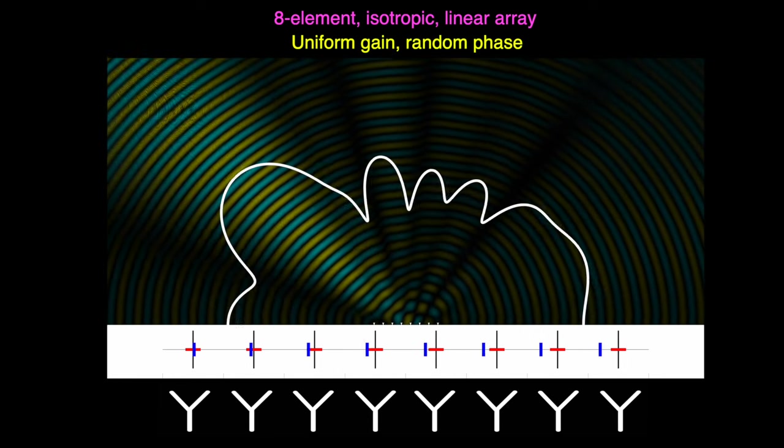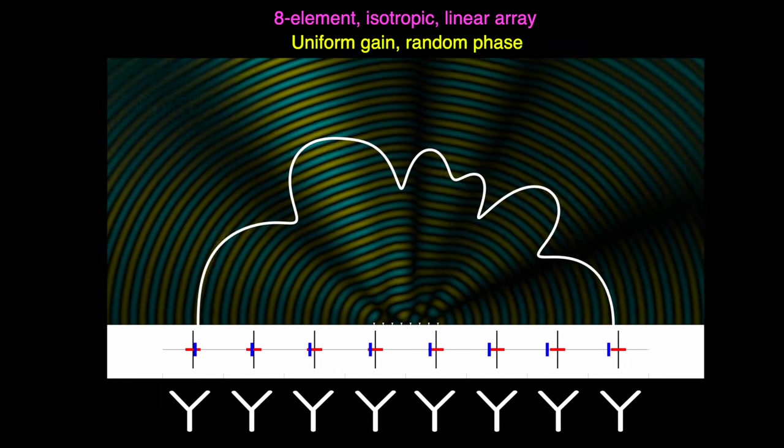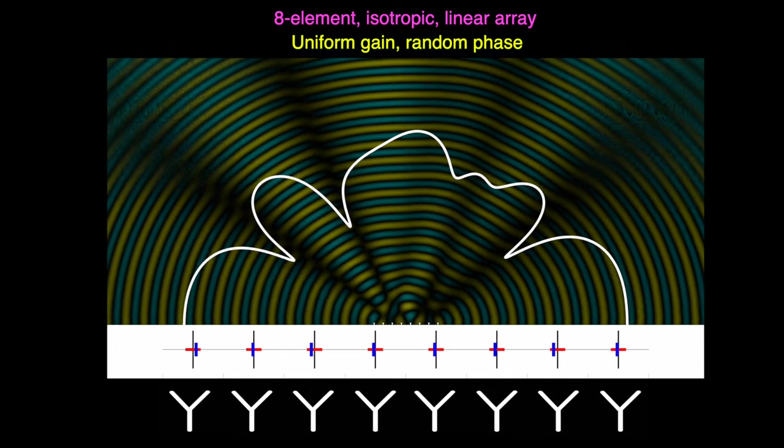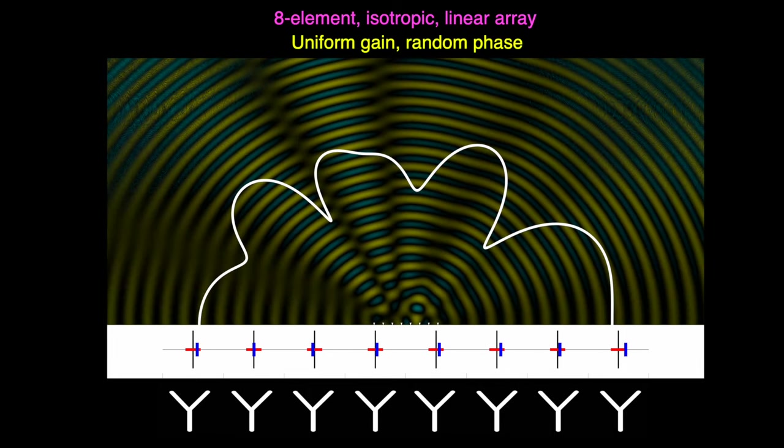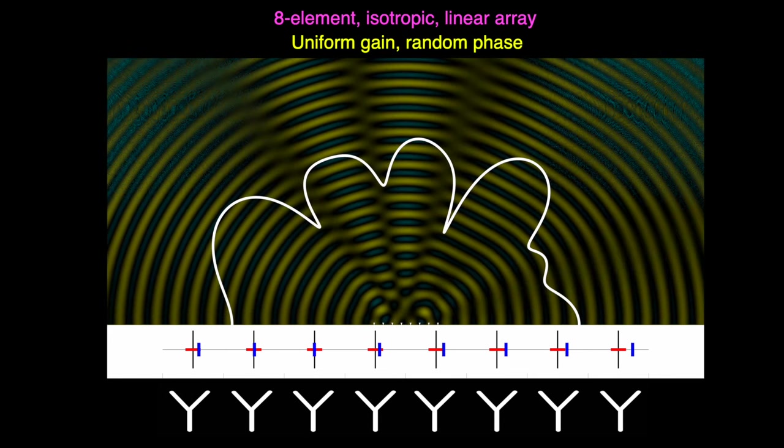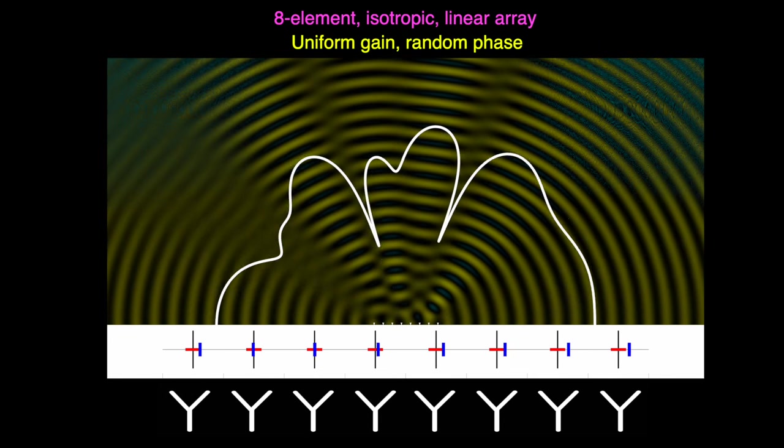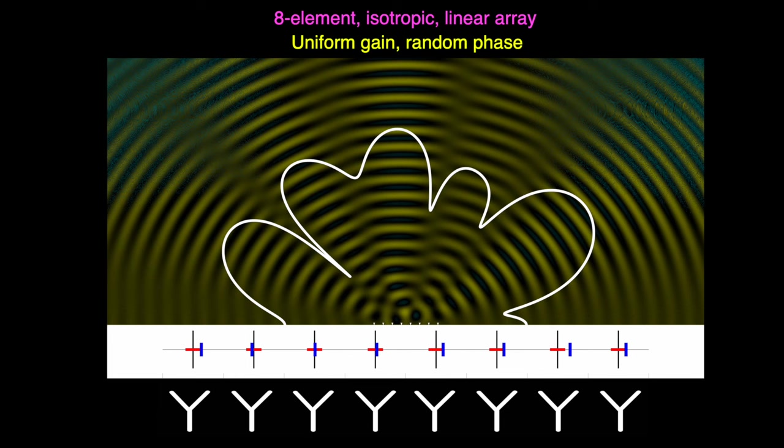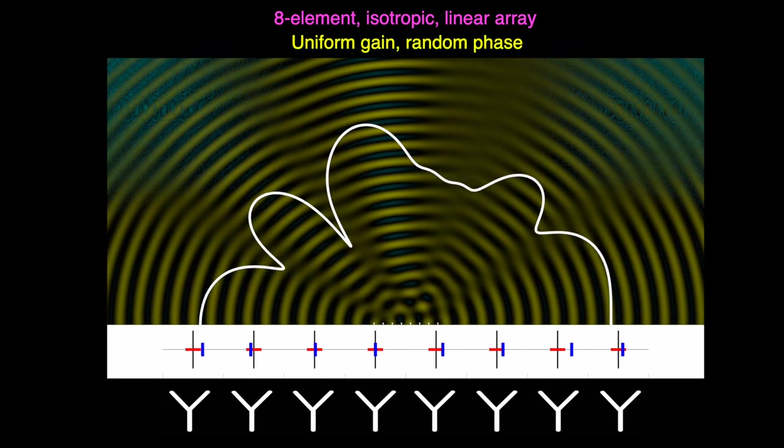But just like with gain, we aren't limited to regular spacing of phase shifts. We can apply any arbitrary phase shift to each element separately. For example, these are a bunch of different random phase shifts. And so you can see how much this also affects the pattern.